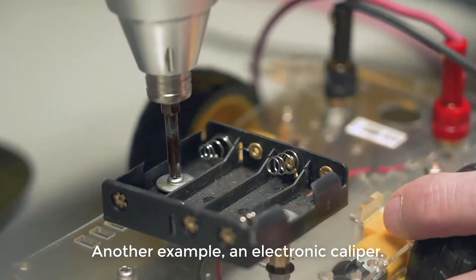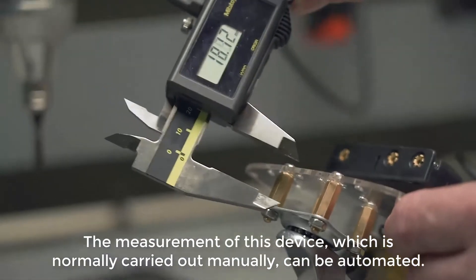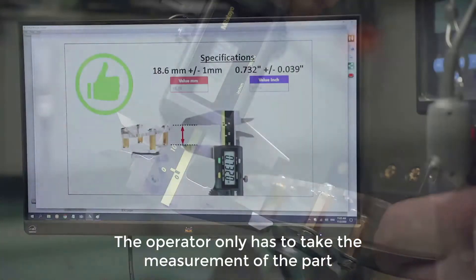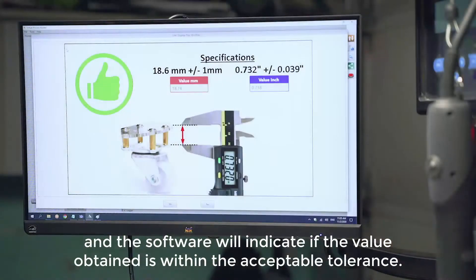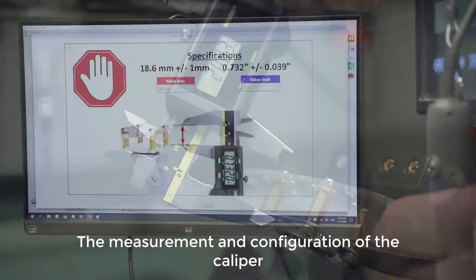Another example: an electronic caliper. The measurement of this device, which is normally carried out manually, can be automated. The operator only has to take the measurement of the part, and the software will indicate if the value obtained is within the acceptable tolerance. The measurement and configuration of the caliper will be stored with the manufacturing data for full traceability and archival.